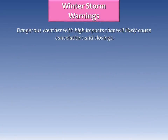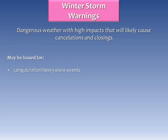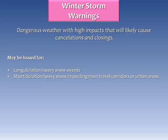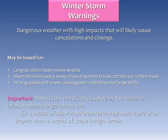Winter storm warnings take into consideration dangerous weather with high impacts that will likely cause cancellations and closings, such as schools, sporting events, workplaces, roads and highways, mountain passes, etc. Warnings may be issued for the following: any long duration heavy snow event, short duration heavy snow events impacting main travel corridors or urban areas, and also strong winds with snow causing poor visibilities and large drifts of snow. This is important to note — impacts are not dictated solely by the weather; location also plays a large role as well.